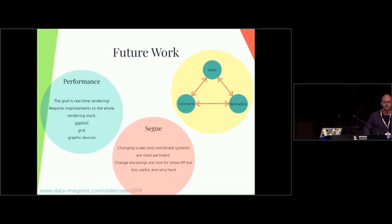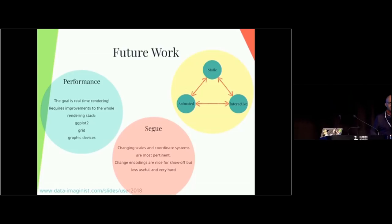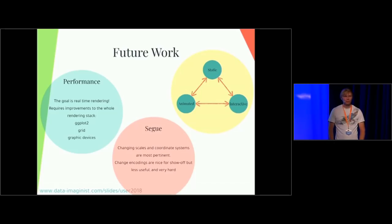My question is about the Gapminder animation — specifically the one where you delete a decade worth of data and then interpolate the animation between 1970 and 1980. If I'm interested in that same animation but actually comparing the interpolated points with the actual data — like, how much harder would it be to make that animation? You would just add an additional layer with the full dataset and then it would happen.